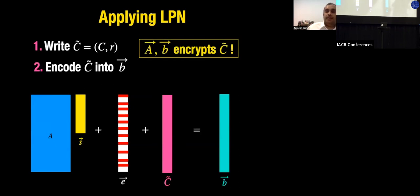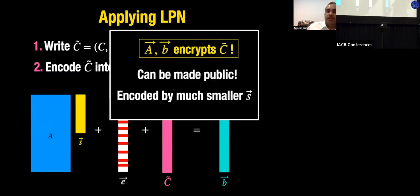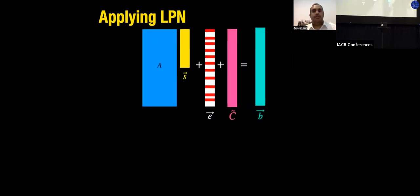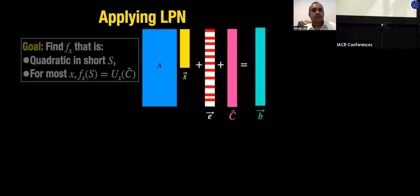The key point is that C̃ is now encoded with a secret s of very small dimension compared to the length of C̃, and this is what makes it helpful for the degree compression step.